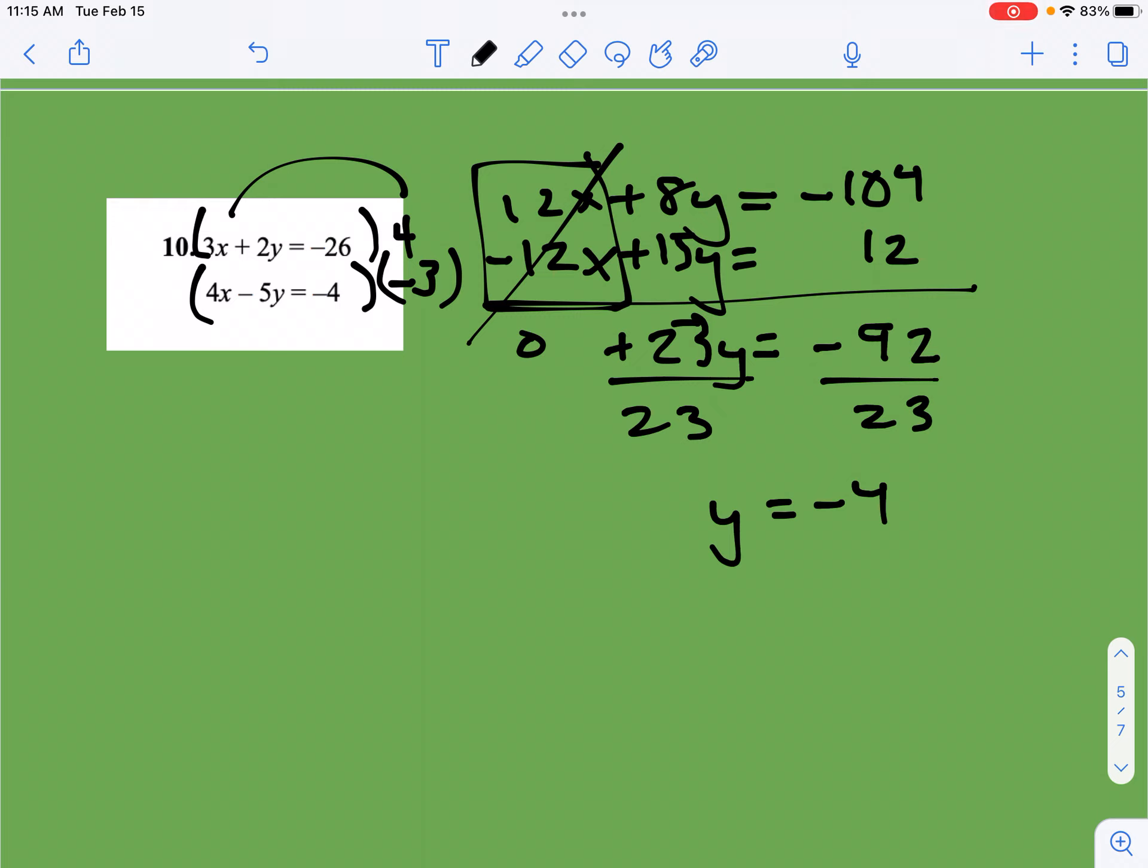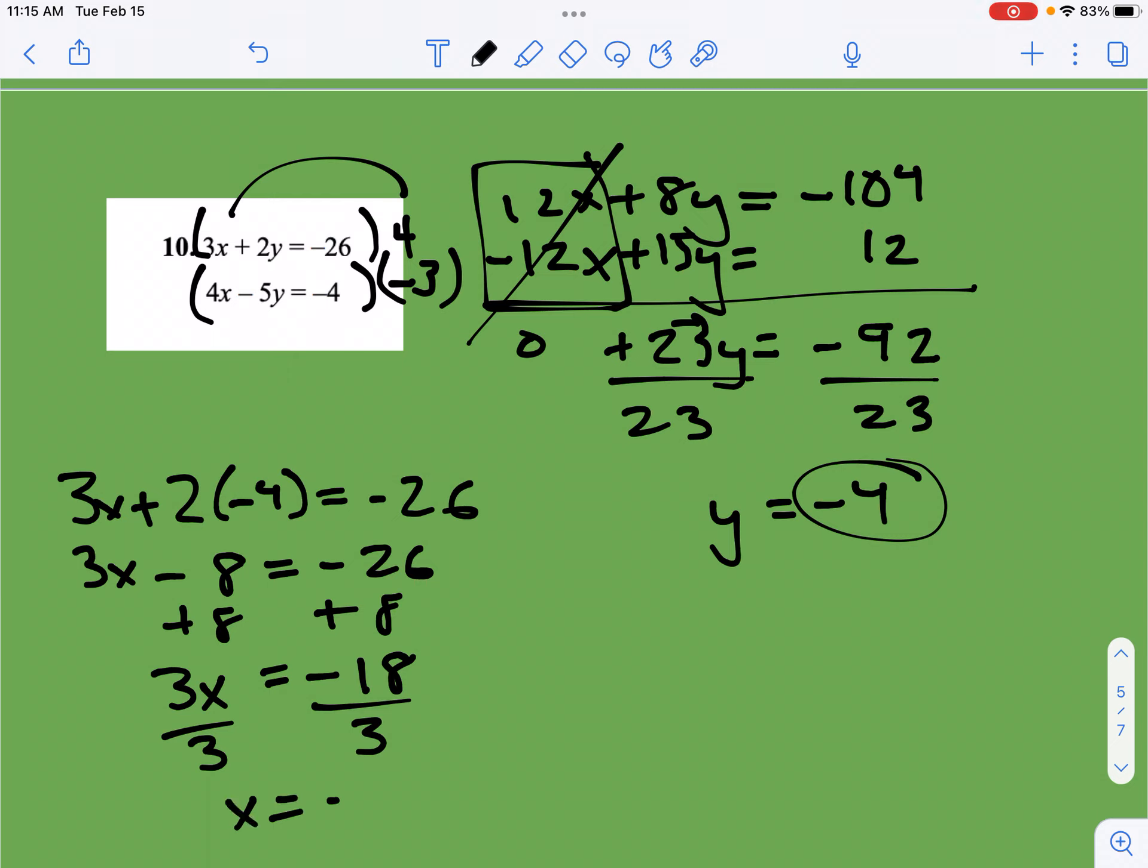Okay, so now my next step is let's take this and let's put it in one of the equations and solve for it. So we go 3x plus 2 times negative 4 equals negative 26. So you get 3x minus 8 equals negative 26. You're going to add 8 to both sides, and that's going to get you to negative 18. 3x divide by 3, x is equal to negative 6.